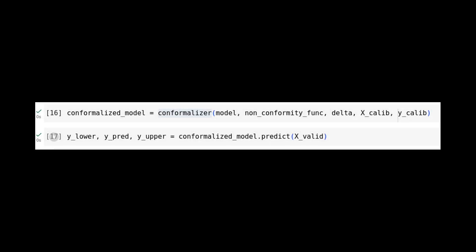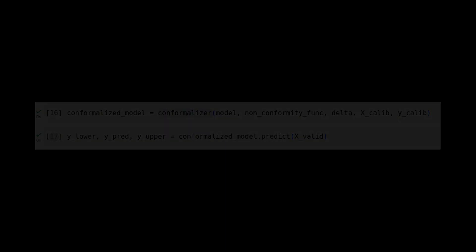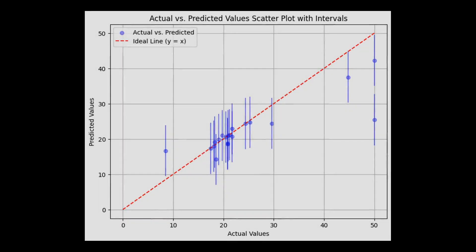Now that we have this class in place, using it is remarkably straightforward. To obtain an interval predictor, which we can call the conformalized model, all we need to do is pass the pre-trained point predictor as input. Once that's done, calling the dot predict method on this conformalized model becomes our gateway to obtaining not only point predictions but also the associated upper and lower bounds of the prediction interval. With a confidence level delta of 0.9, our predicted intervals will be like this.